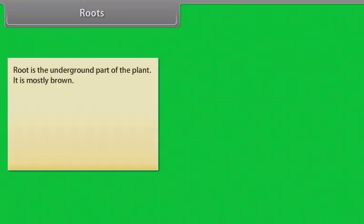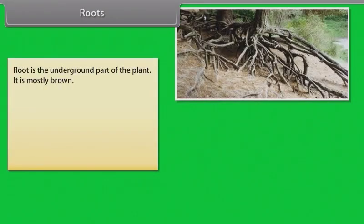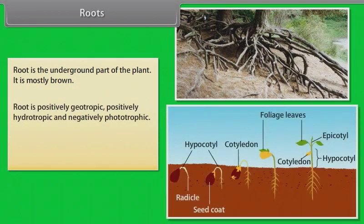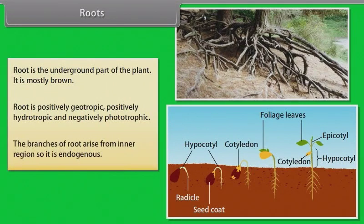Root is the underground part of the plant. It is mostly brown. Root is positively geotropic, positively hydrotropic and negatively phototropic. The branches of root arise from the inner region, so it is endogenous.